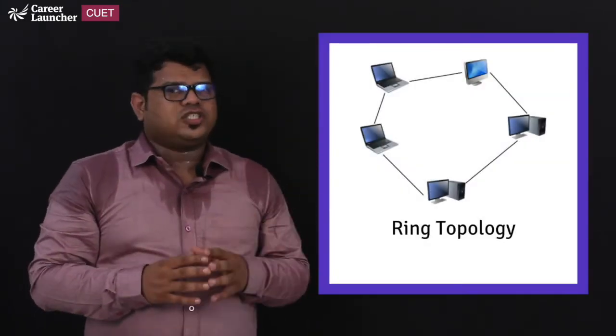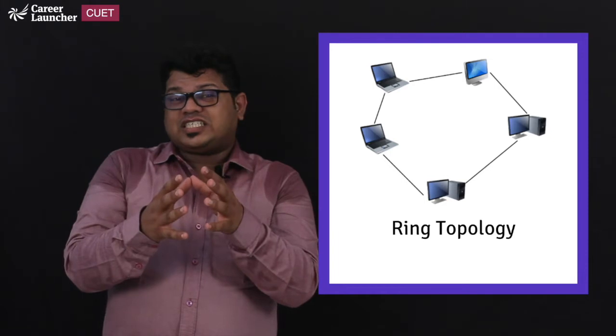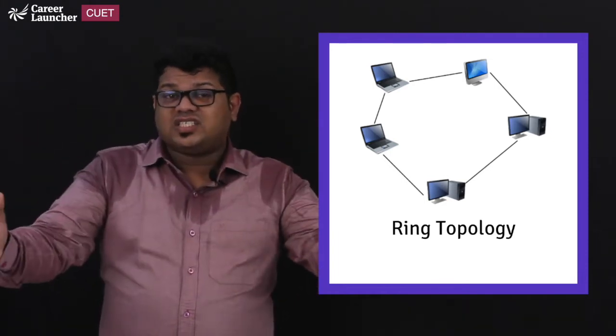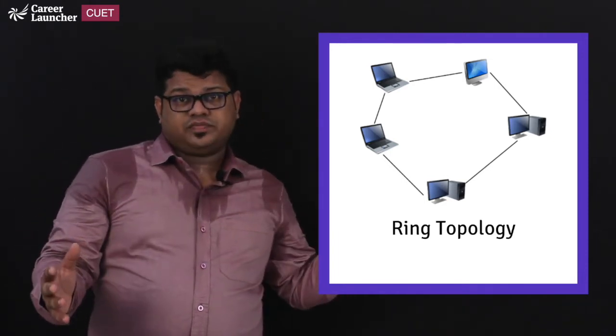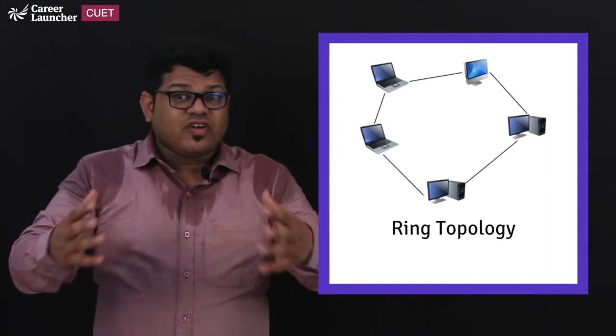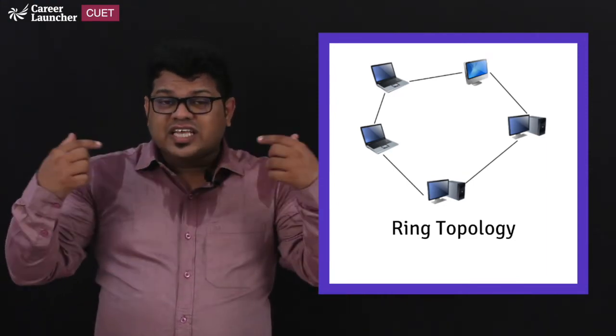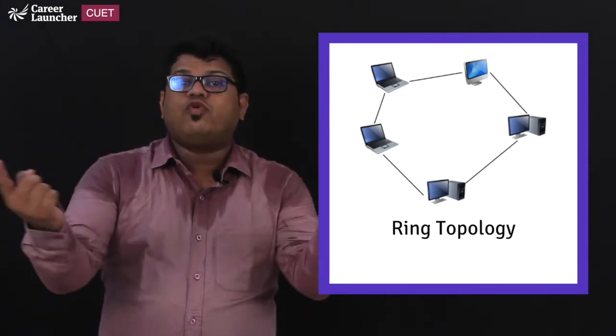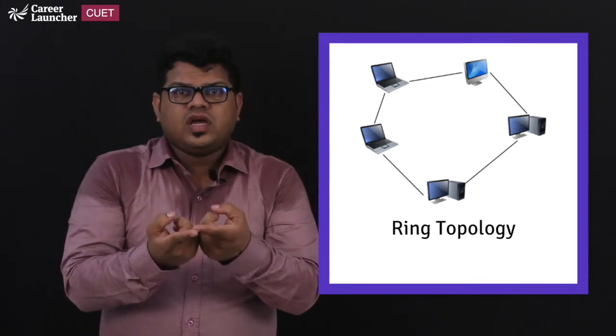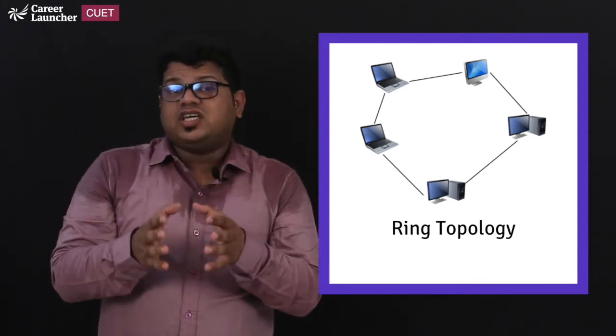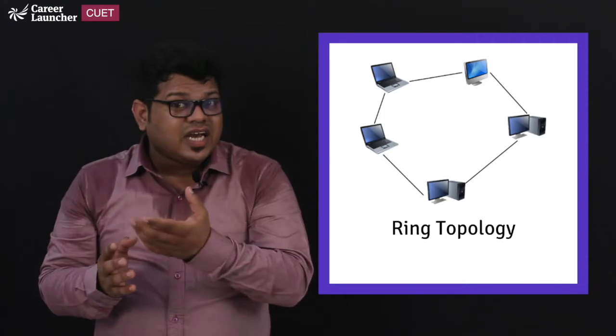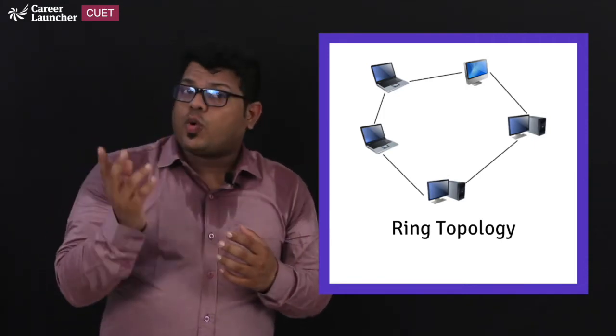Let us go for the next one which is ring topology. In ring topology a computer is connected to two other devices on either side as given here. So each and every computer will go with the same kind of connection and finally it will form a ring. And so what happens, the communication here happens either in clockwise direction or in anticlockwise direction.